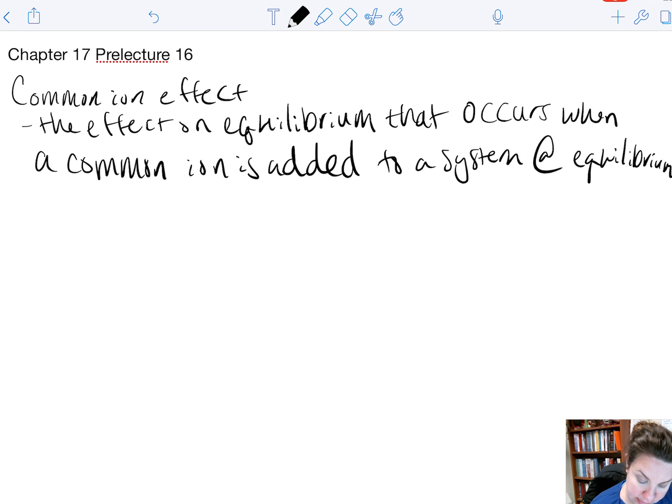Okay, so for instance, if we have the acid HF. HF is a weak acid, so its dissociation process is in equilibrium. Now, if we add NaF to this equilibrium process, this fluorine will add in on this side of the equation. So it will add in on our product side.